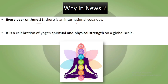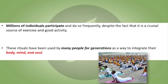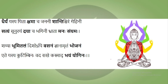Every year on 21st June, International Yoga Day is celebrated. Basically, this is a celebration of yoga's spiritual and physical strength at a global level. As you can see in the image, these are chakras in the body — there are seven chakras, starting with the Kundalini at the base and the crown chakra at the top. Millions of individuals participate all over the globe, and these rituals have been used across many generations as a way to integrate body, mind, and soul.